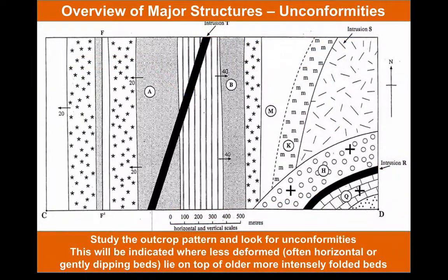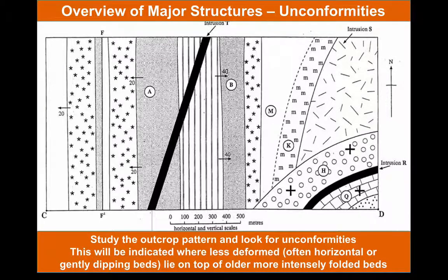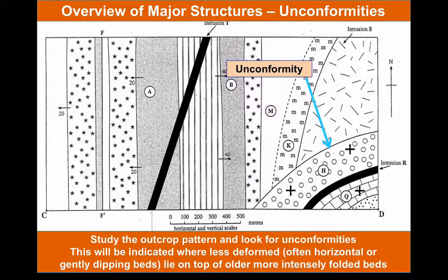Having identified the igneous rocks, we can now look for unconformities. For this, we look at the outcrop pattern — we look for beds that don't fit, that cut across older beds. Often we'll see a lower dip of beds above an unconformity compared with those beneath. Here we can see an unconformity at the base of the bed labelled H, which we can also see is horizontal. The beds beneath are either a granite — giving us a heterolithic unconformity — or steeply dipping sedimentary rocks.